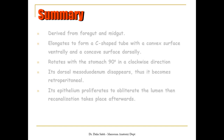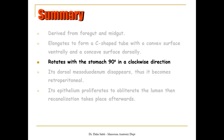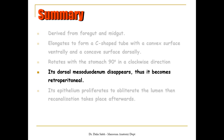In summary, the duodenum is derived from both the foregut and midgut, and the boundary between these two areas is the entrance of the bile duct. It first elongates to form a C-shaped tube with a convex surface ventrally and a concave surface dorsally. Then it rotates with stomach rotation 90 degrees in a clockwise direction. Its dorsal meso-duodenum disappears, thus it becomes a retroperitoneal structure. Its epithelium proliferates to obliterate the lumen, then re-canalization takes place afterwards.